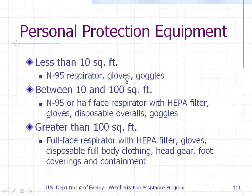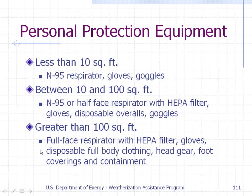Personal protective equipment: for an area less than ten square feet, you need an N95 respirator, gloves, and goggles. Between ten and a hundred square feet, you need an N95 respirator or a half-face respirator with a HEPA filter, gloves, disposable overalls, and goggles. For areas greater than 100 square feet, you need a full-face respirator with a HEPA filter, gloves, disposable full-body clothing, headgear, foot coverings, and containment.